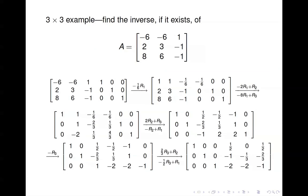This method works no matter what size your matrix is, so let's scale it up for a 3 by 3. Start with matrix A, tack on the 3 by 3 identity matrix, and go through row operations. After all the arithmetic, if the first three columns look like the identity matrix, then the last three columns are the inverse of A.